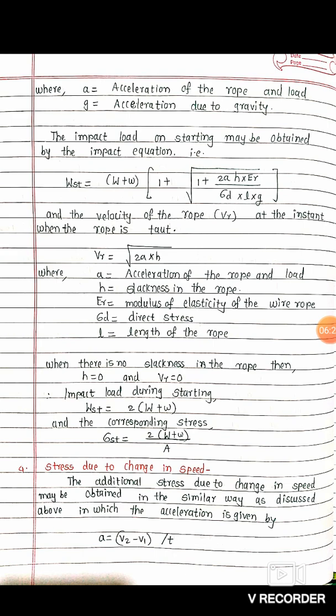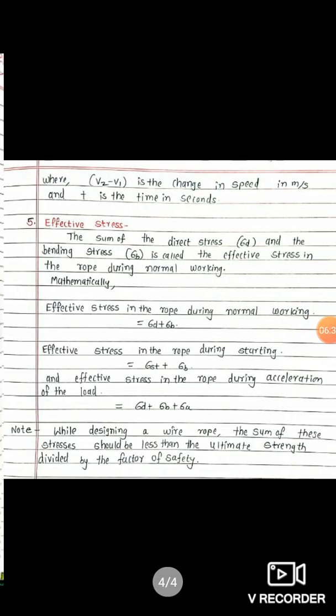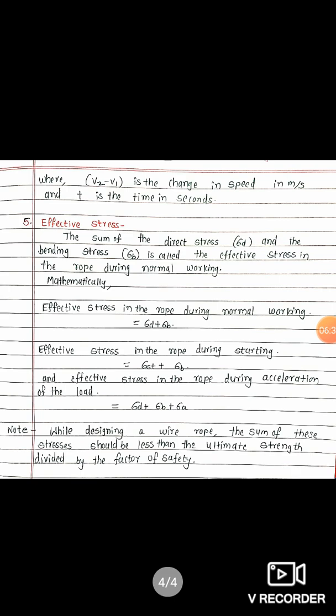The fourth point is stress due to change in speed. The additional stress due to change in speed may be obtained in a similar way as discussed above, where the acceleration is given by a equals (V2 minus V1) divided by t, where (V2 minus V1) is the change in speed in meters per second and t is the time in seconds.